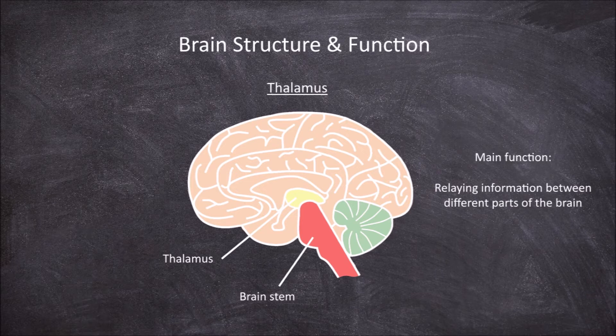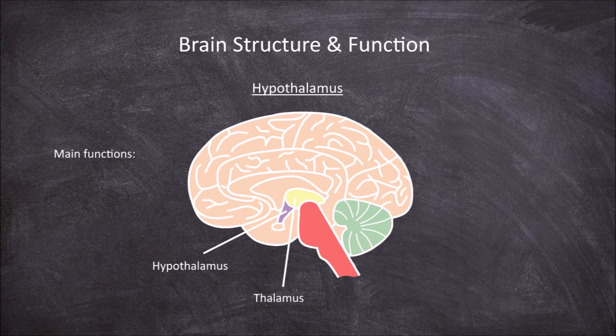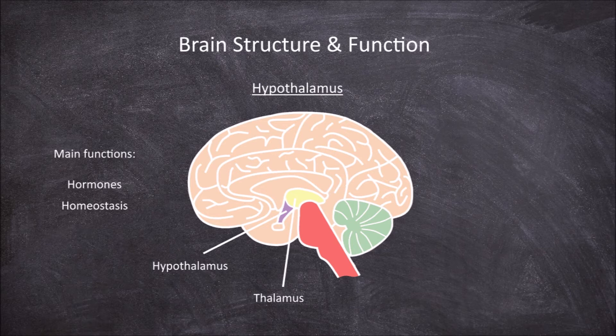The next part of the brain is the hypothalamus, which is found below the thalamus. The main functions of the hypothalamus are releasing hormones and in homeostasis. This means it's involved in maintaining the internal balance of body functions.